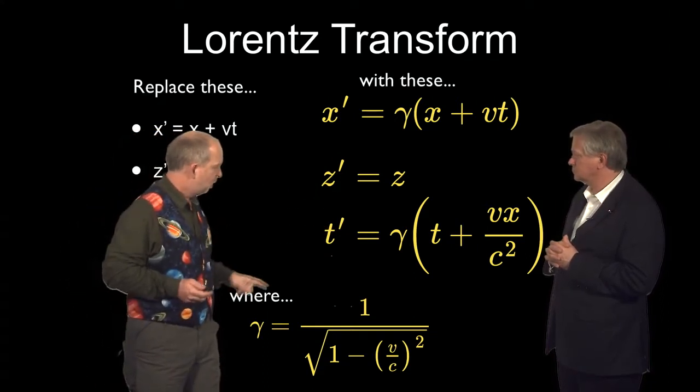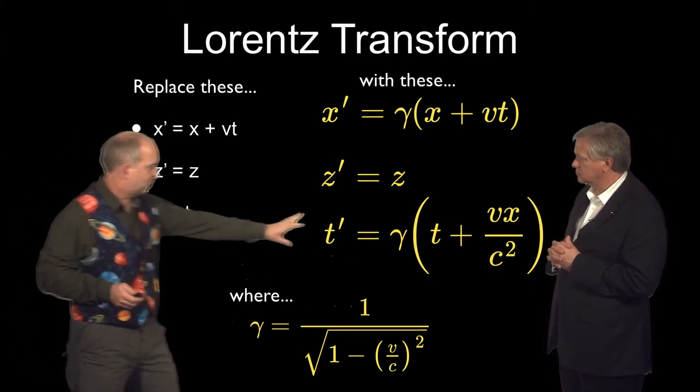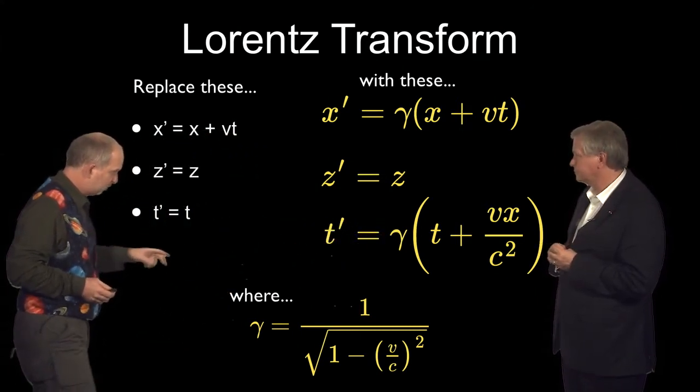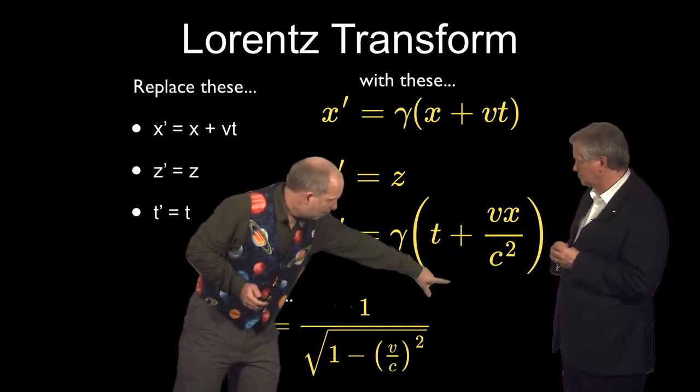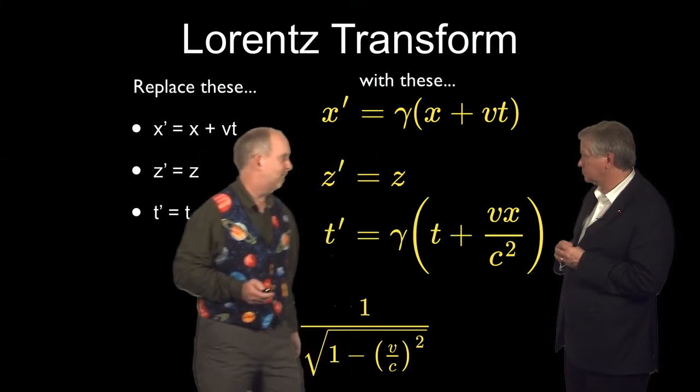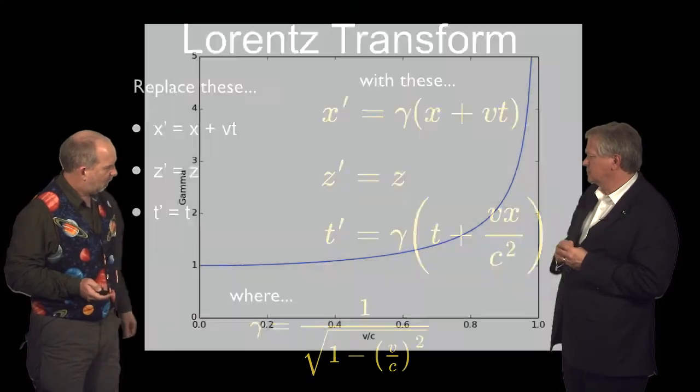For z, there's no change. Time it's a bit weirder still. Once again, when you make the velocity very low, this comes out as the same as that. But what you're seeing here is once again a gamma plus a velocity times a position over c squared. So this actually depends on where you are as well as the time. So that's a bit weird.